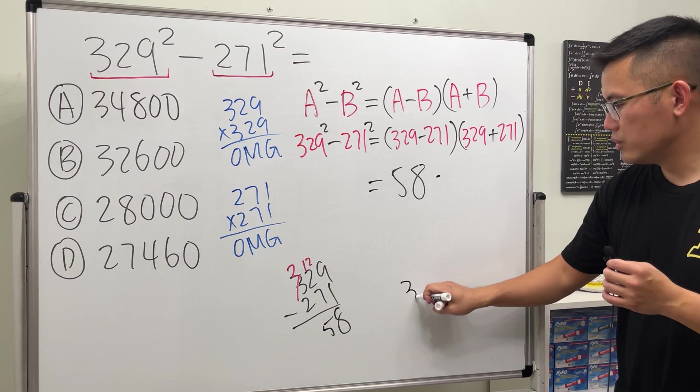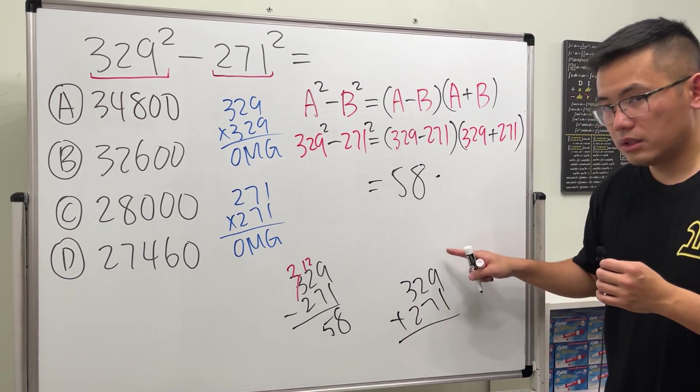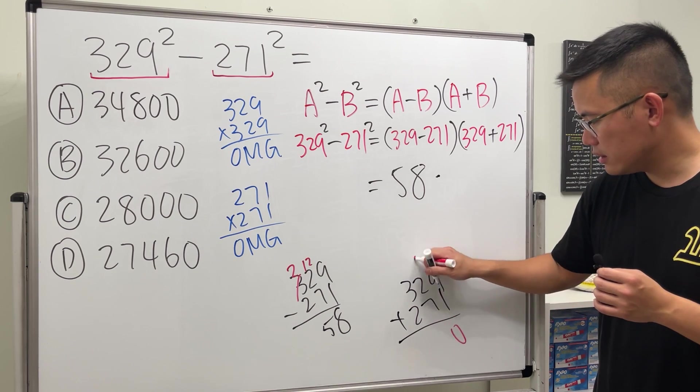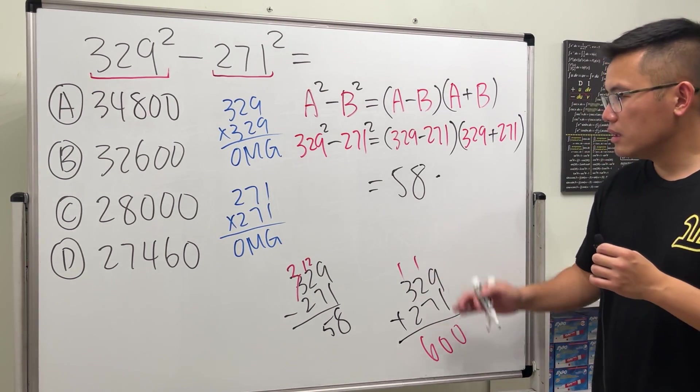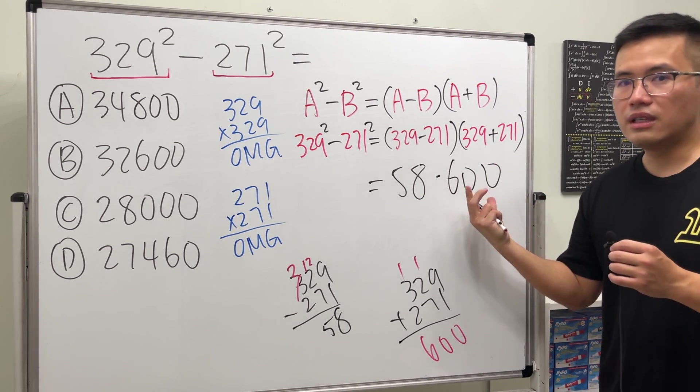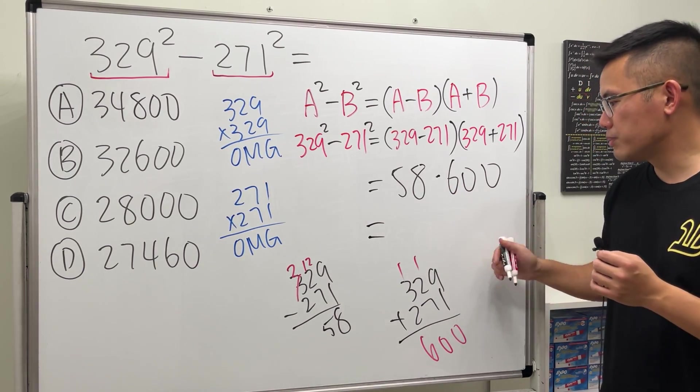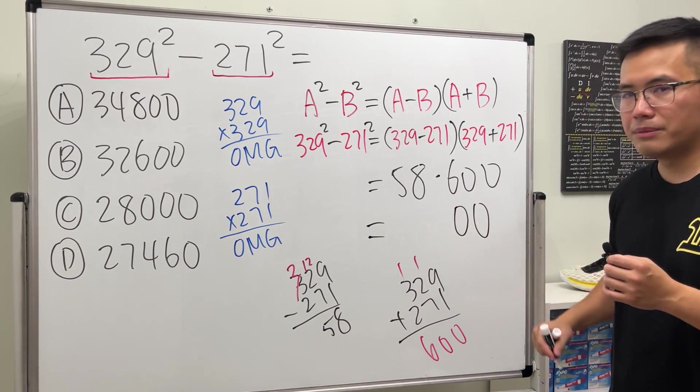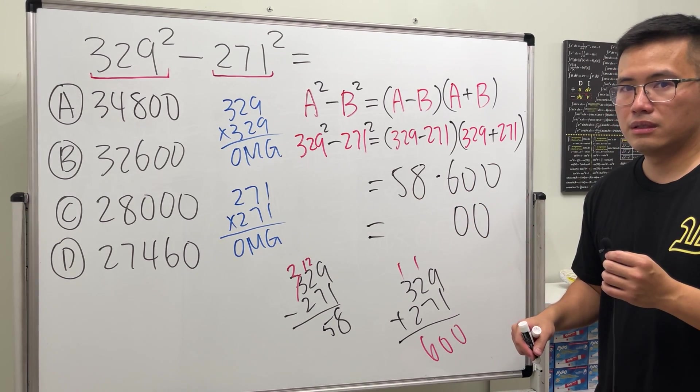So I will show that right here. What's this? 329 plus 271 - add, we get 10 and then another 10, oh look at that, and then 6. So we just have to do 58 times 600.